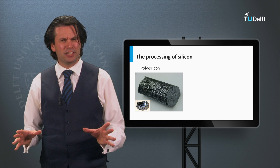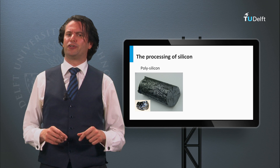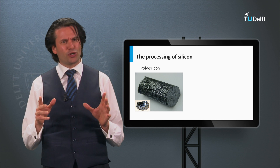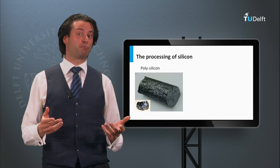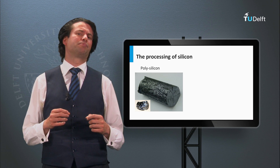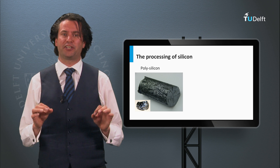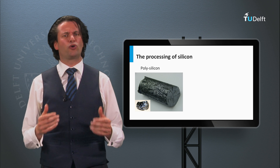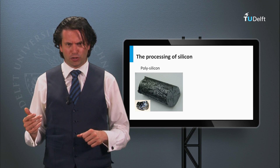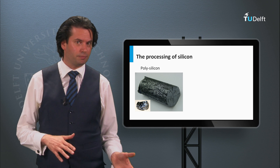The chemical vapor deposition furnace produces polysilicon rods in what is called the Siemens process, which consumes a lot of energy. Another method is the production of polysilicon granules in so-called fluidized bed reactors, which operates at lower temperatures and consumes much less energy.